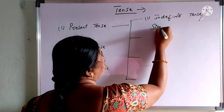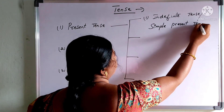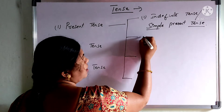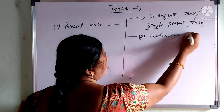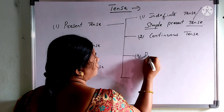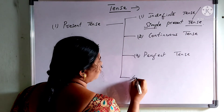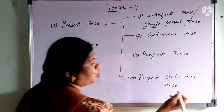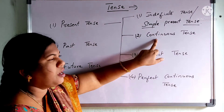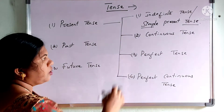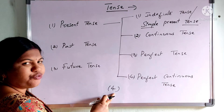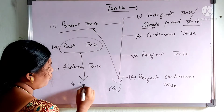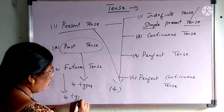This can also be called simple tense or simple present tense — under the name of indefinite tense. So present tense is divided into four types: indefinite tense, continuous tense, perfect tense, and perfect continuous tense. Similarly, in past tense you also get four types, and in future tense you also get four types.